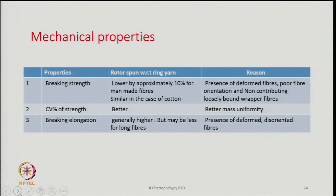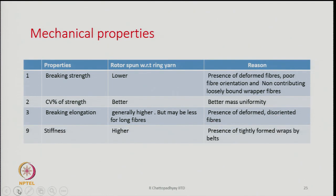Breaking elongation is generally higher in rotor yarn because of deformed and disoriented fibers — when you stretch these fibers, they first try to unbend, hence the breaking elongation is generally more. However, for long fibers, breaking elongation of rotor spun yarn may be slightly less than the equivalent ring spun yarn.